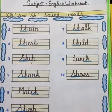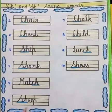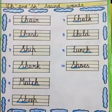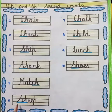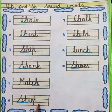Now next word is S-H-E-E-P, sheep. S-H-E-E-P, sheep. SH ka sound cha-a-a-ya hai. Sheep, sheep.